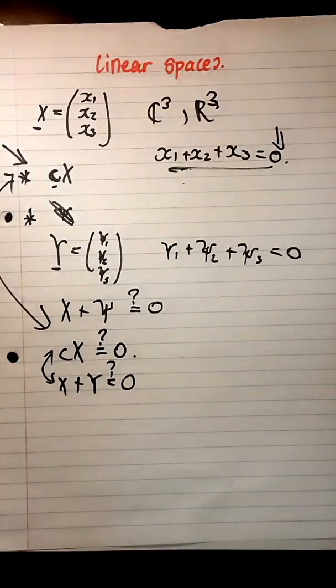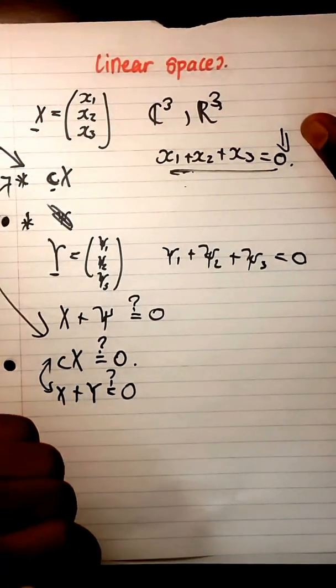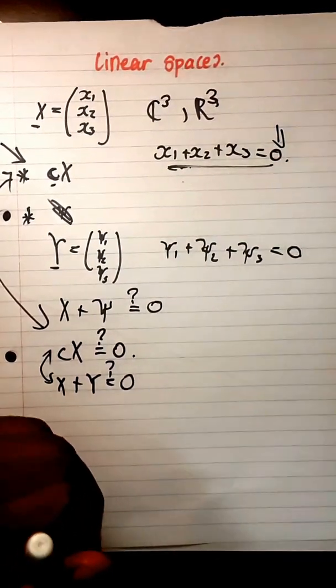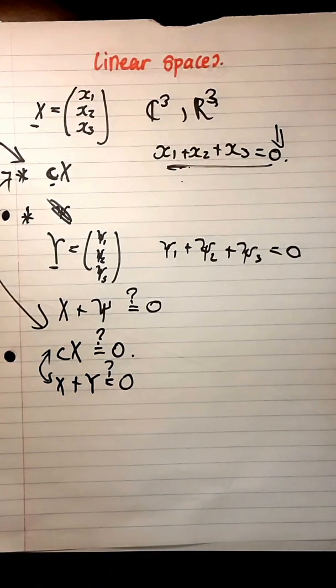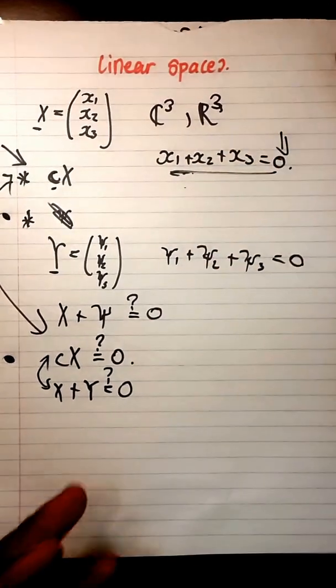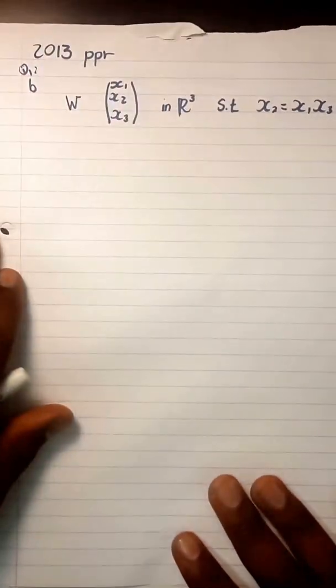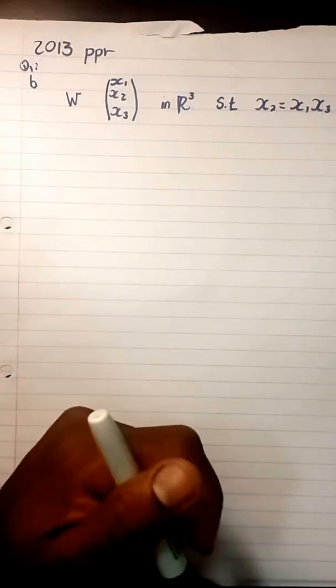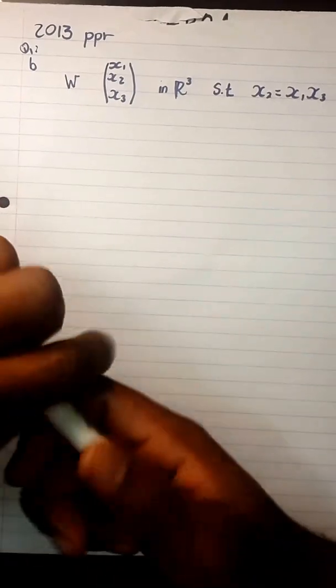In this video I'll be covering linear spaces. What you're seeing here is basically what I did on the previous video, and in this video I'll be doing an example of how we can determine whether a given vector set is a linear space or not. If you want to understand what is going on with the sheet, check out the previous video. The example I'll be doing is from the 2013 paper, question 1B.